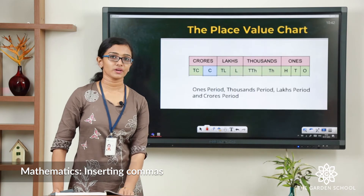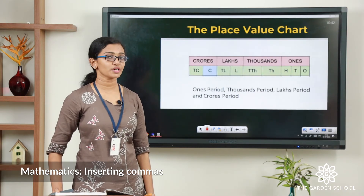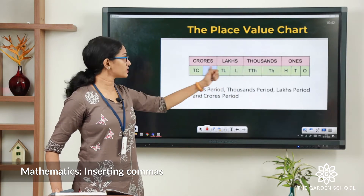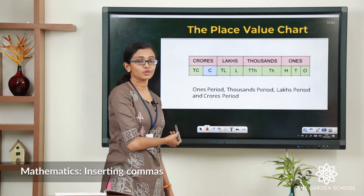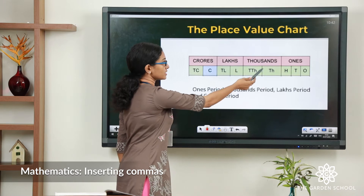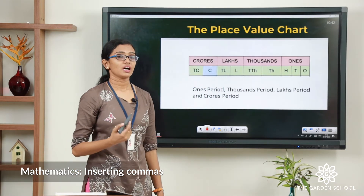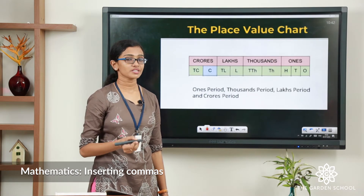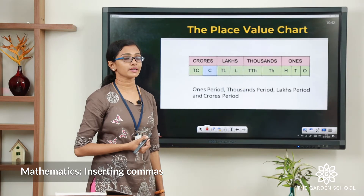We have already talked about the place value chart. Here is a place value chart according to the Indian system of numeration. You can see all the places marked in it from 1 to 10 crores. A few places are grouped together to form different periods: the 1s period, 1000s period, lakhs period, and crores period. We insert commas in between to separate the periods, so that it will be easier for us to read the number.